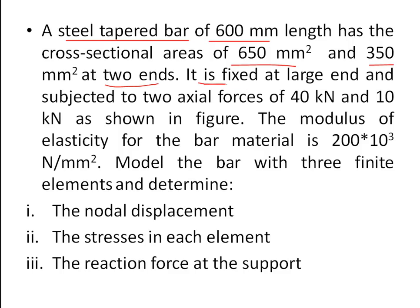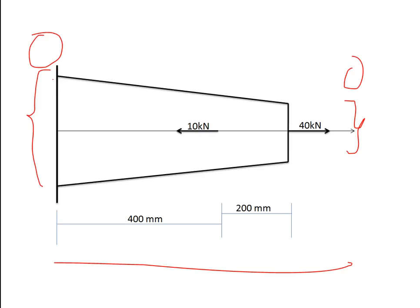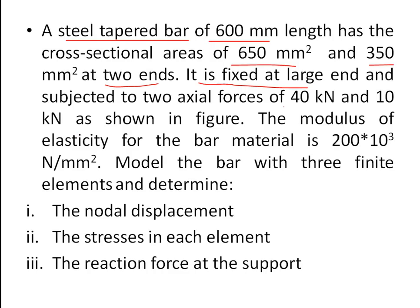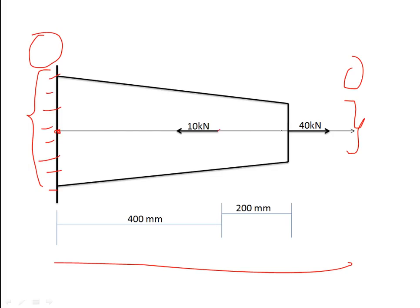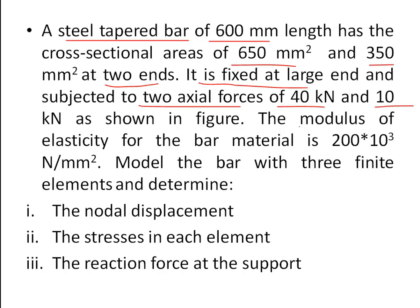The bar is fixed at the large end, constrained from that edge, so displacement at that point will be zero. Two axial forces are applied: 40 kN at the free end in the positive x direction, and 10 kN at a point 200 mm away in the negative x direction. The modulus of elasticity E is given as 200 × 10³ N/mm².